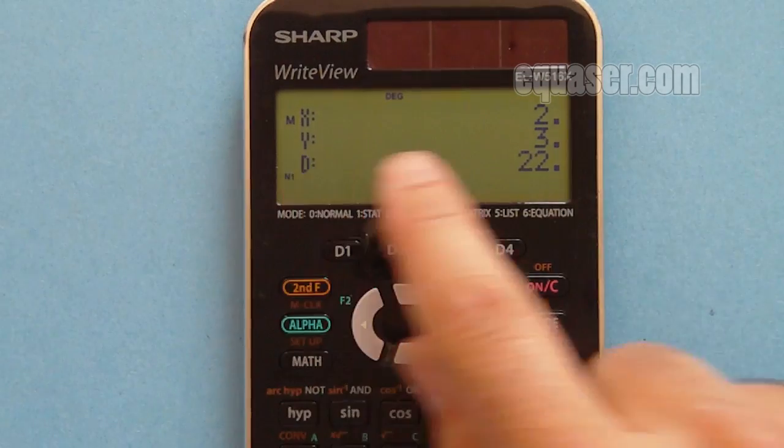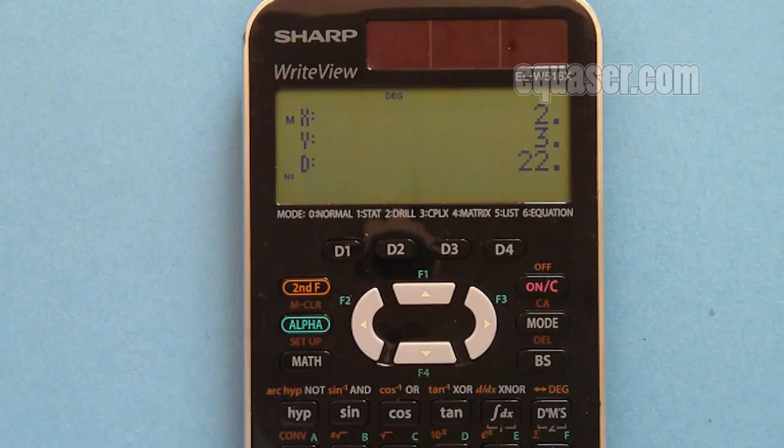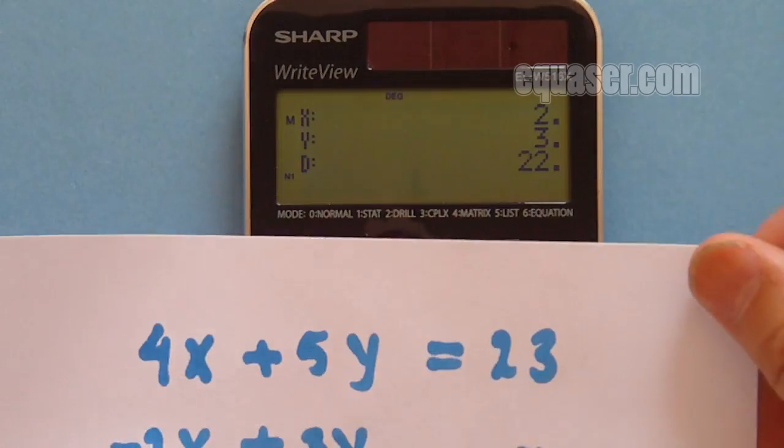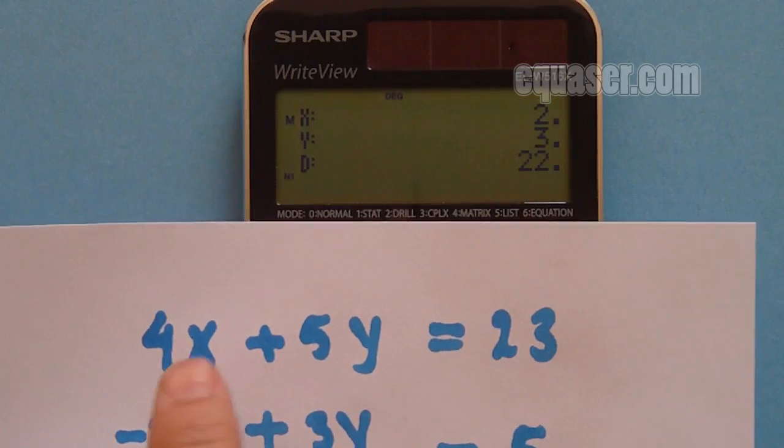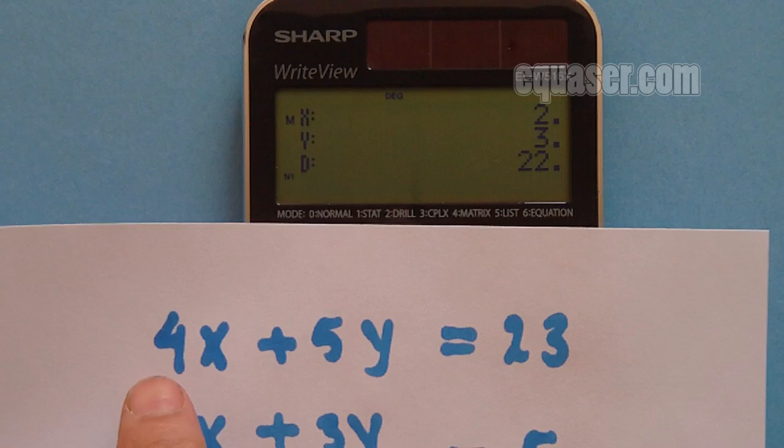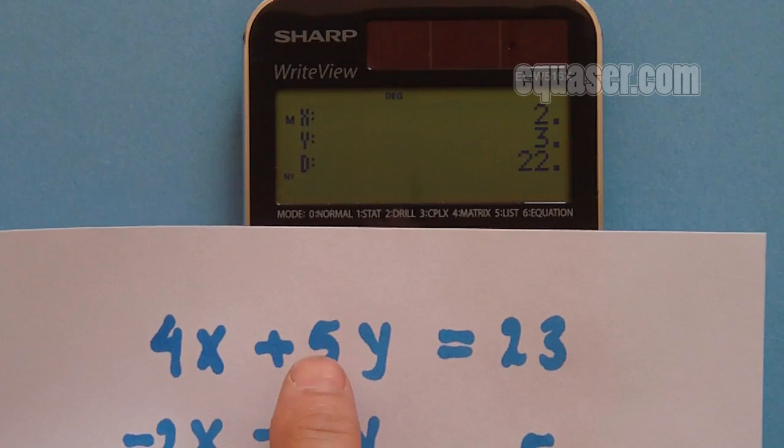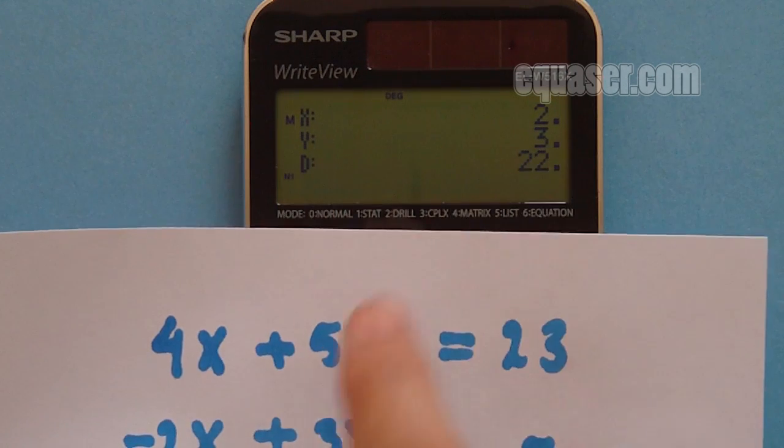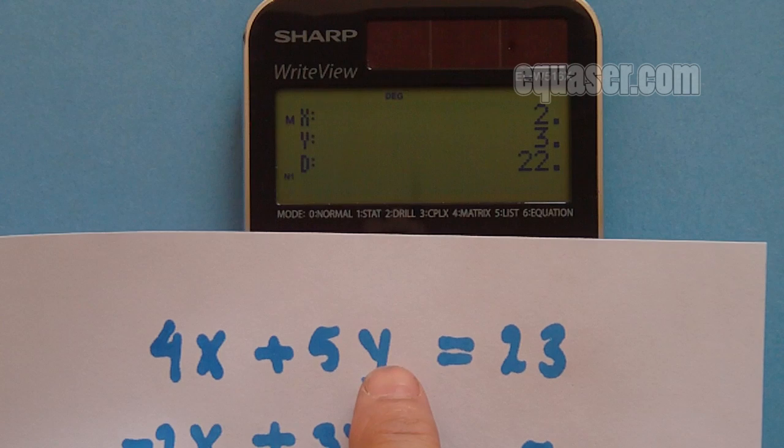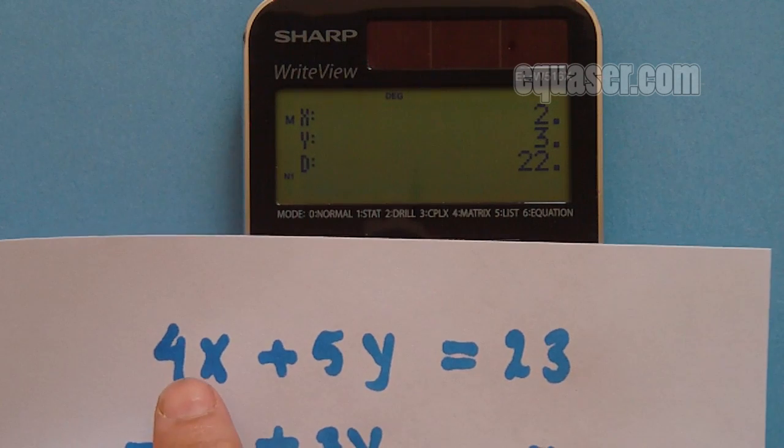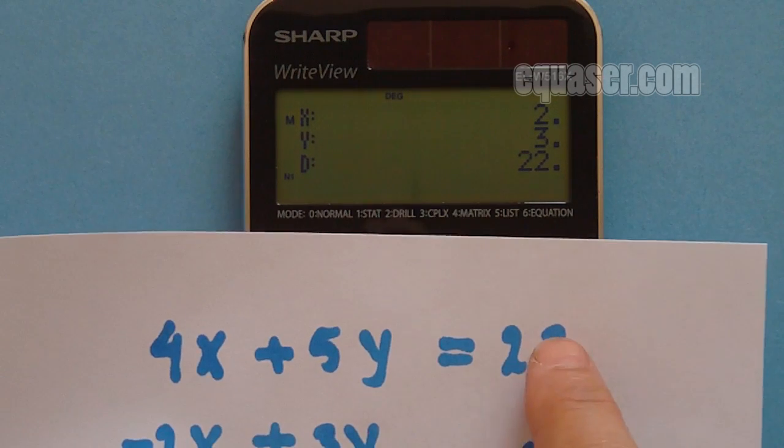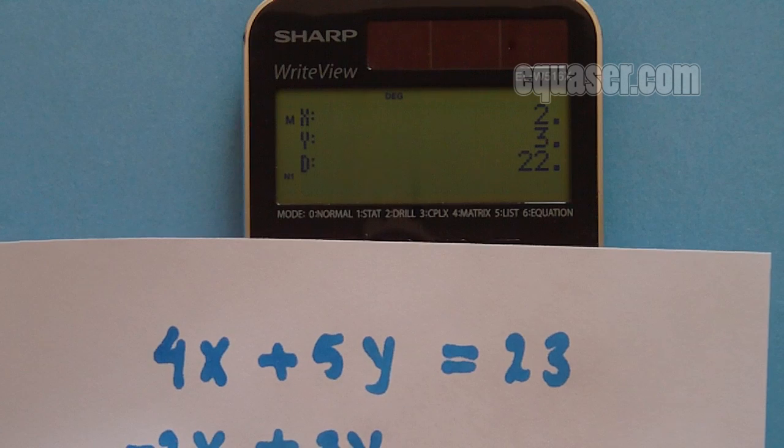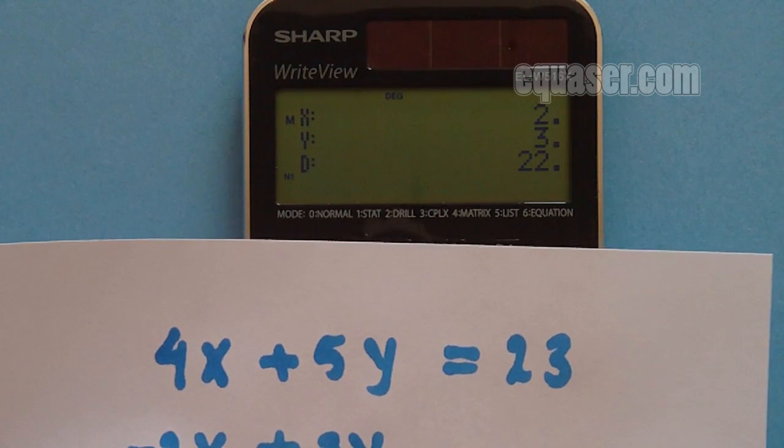Let's verify: X is 2. If I put 2 here, 2 times 4 is 8. Y is 3. 5 times 3 is 15, so 15 plus 8 is 23, correct. Next line: 2 times 2 is negative 4. 3 times 3 is 9. 9 minus 4 is 5.